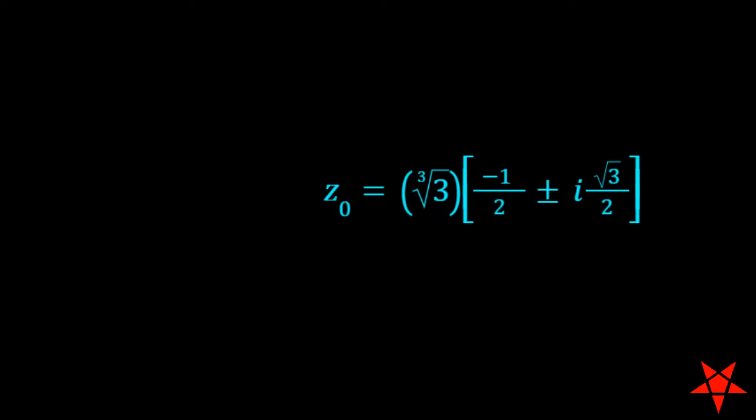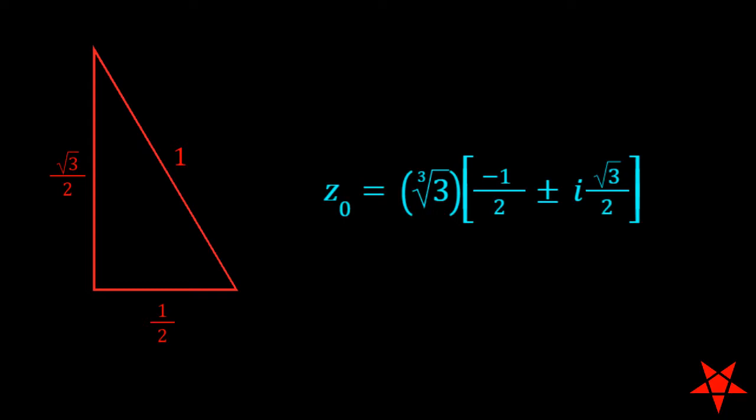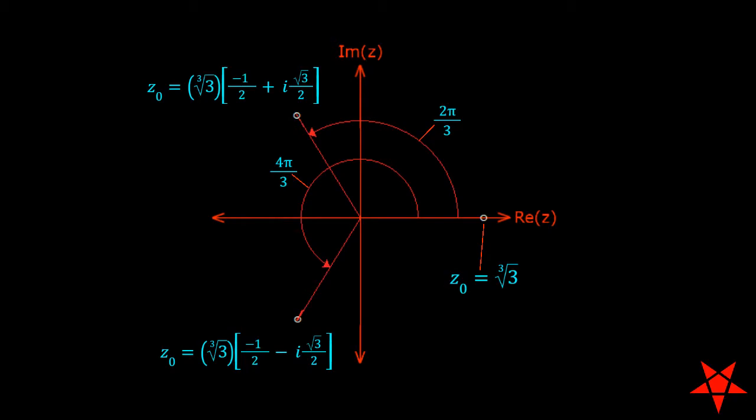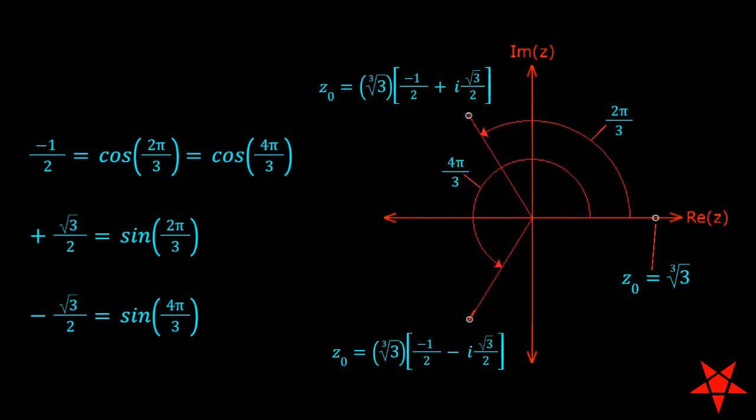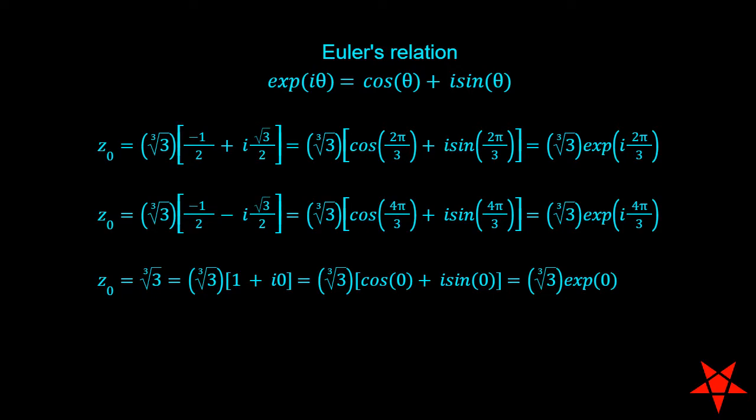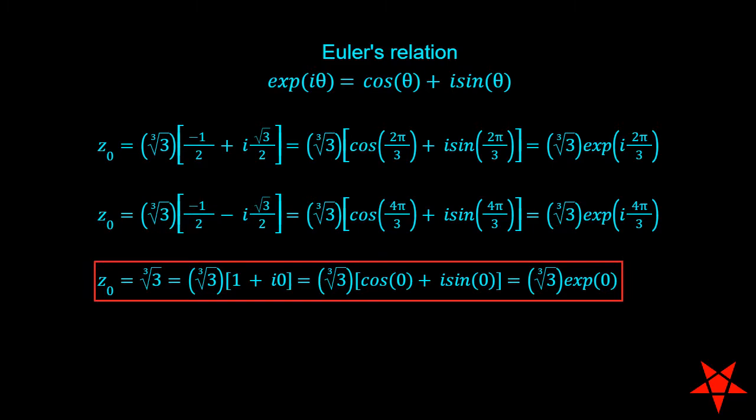These vectors should be familiar to anyone who has been around some 30-60-90 triangles. Plotting these points on the complex plane shows us their respective phase angles. With both their magnitude and respective phase angles in hand, as well as an appreciation for what these individual trig values mean, we can represent the singular points using Euler's relation. Using this notation to describe the singular point on the real axis is, in this case, a little redundant, but I thought it best to be complete.